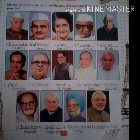The fourth picture is Morarji Desai. Morarji Ranchhodji Desai was an Indian independence activist who served between 1977 and 1979 as the fourth Prime Minister of India and led the government formed by the Janata Party. So Morarji Desai is our fourth Prime Minister of India.